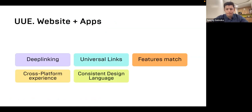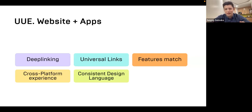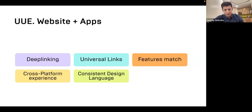We usually hear about deep linking — directing users to specific content they need at the moment — universal links for seamlessly connecting web and apps through URLs, feature matching, because it's frustrating when an e-commerce app has limited functionality on mobile, and cross-platform experience for maintaining continued user journeys. For example, in a browser case, it's important when you start your user journey on web and then want to continue it on mobile. And common sense stuff like consistent design.